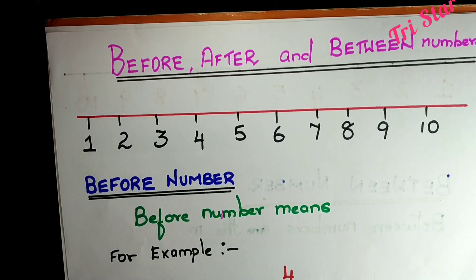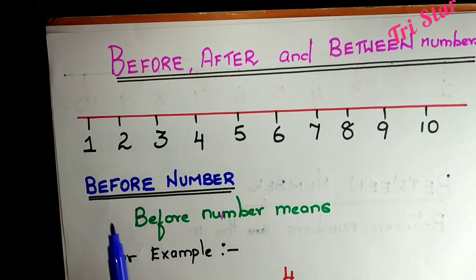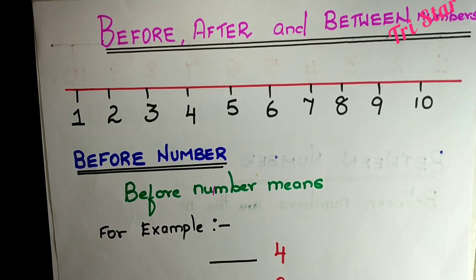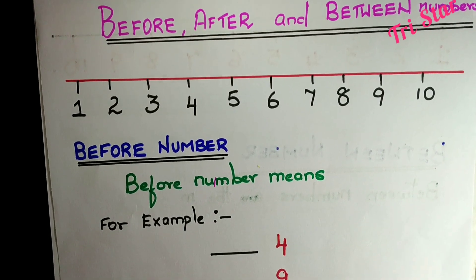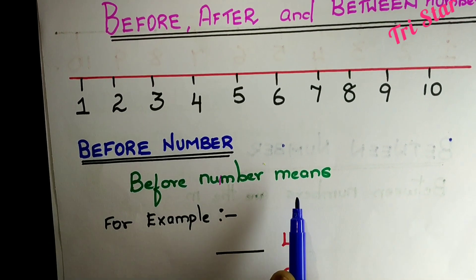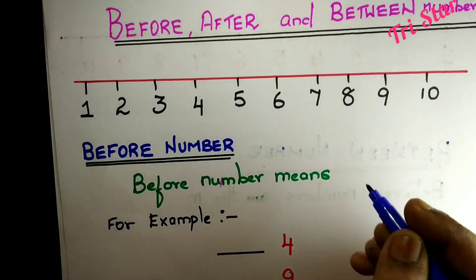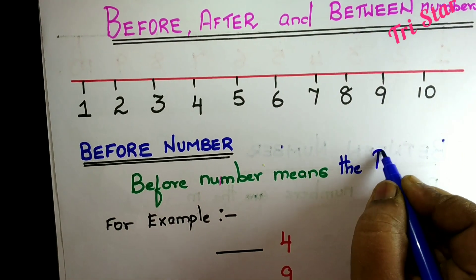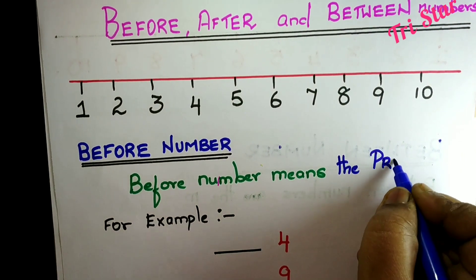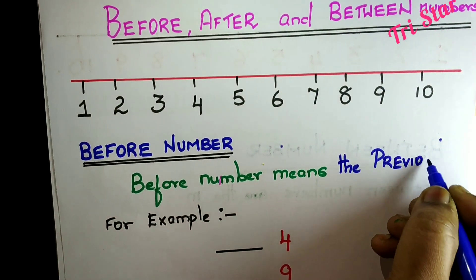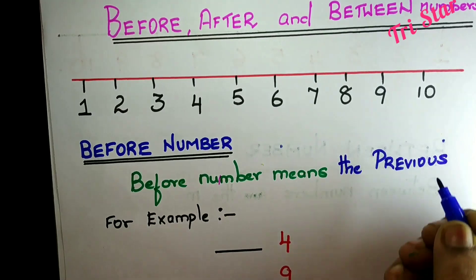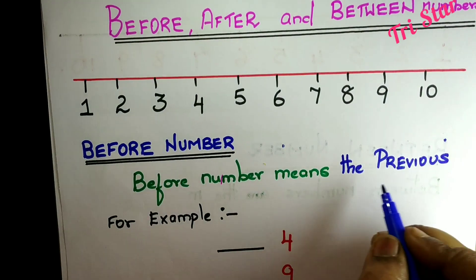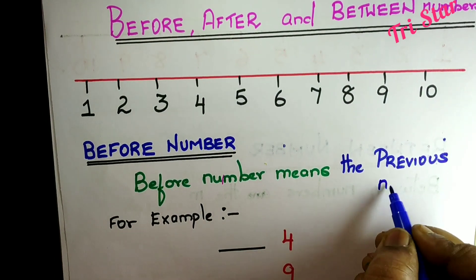Now, first we will look at before numbers. What is before number? Before number means the previous number.